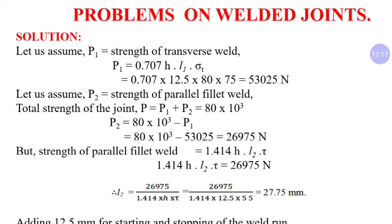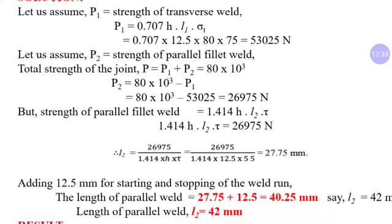P2 = 1.414 × h × L2 × τ × 2. Solving: L2 = 21.75 mm. Adding 12.5 mm each end for starting and stopping of the weld bead or weld run: length of parallel fillet weld = 21.75 + 12.5 + 12.5 = 40.25 mm, rounded to 42 mm. Answer: L2 = 42 mm.